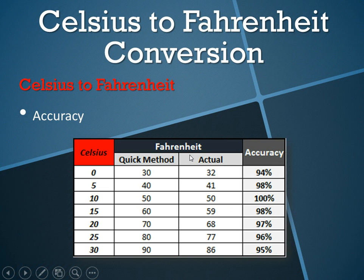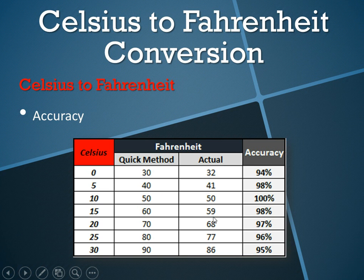It's certainly not perfect — you can't use this on an exam — but if you're in Europe and someone tells you it's 10, 15, or whatever degrees Celsius, you can quickly find out within a few percentage points what the Fahrenheit conversion is. So if it's 15 degrees Celsius, times 2 is 30, plus 30 is 60.